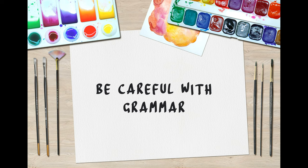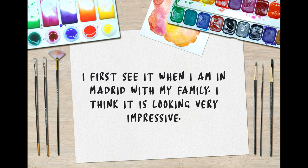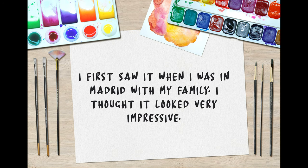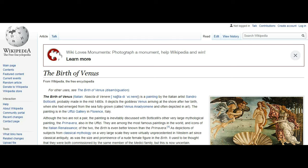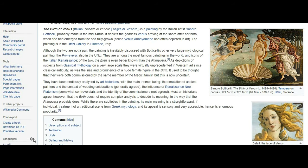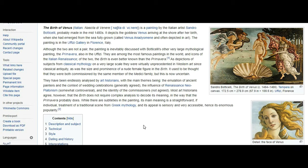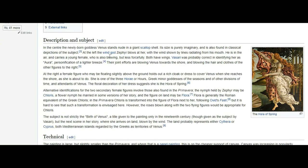You should also be wary of how you use grammar. Remember that the cue card asked you about where and when you first saw it. You cannot say 'I first see it when I am in Madrid with my family — I think it is looking very impressive.' No, you need to use past tenses: 'I first saw it when I was in Madrid with my family. I thought it looked very impressive.' If you are really struggling with language to describe the work of art that comes to mind, you can visit Wikipedia and get some ideas there — just remember to avoid copying anything, as examiners will penalize candidates who use memorized phrases.